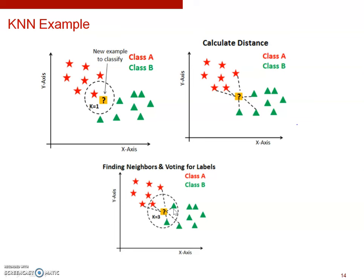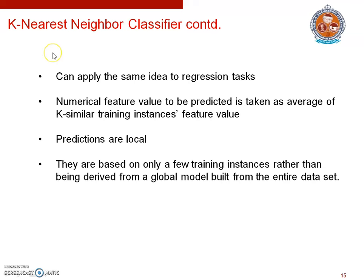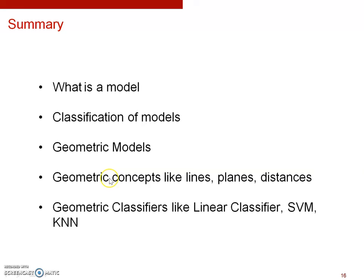With KNN, predictions are local — they are based on only a few training instances rather than a global model built from the entire dataset. This applies to all geometric models as well. In summary, today we have learned about what is a model, the classification of models, what are geometric models, geometric concepts like lines, planes, and distances, and in detail about geometric classifiers like linear classifiers, support vector machines, and K-nearest neighbor classifiers. Thank you.